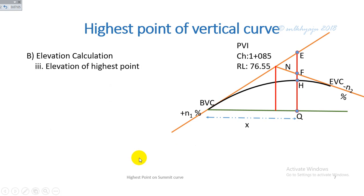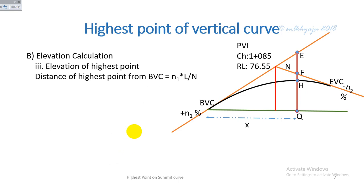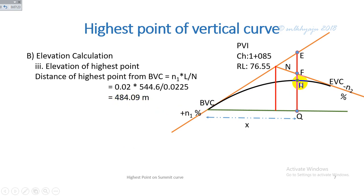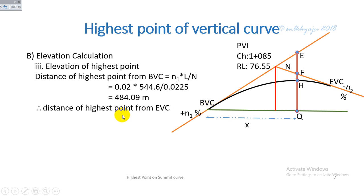The distance of the highest point from the beginning of the vertical curve is calculated using x = n1·L / N, giving x = 484.09 m. As shown in the figure, point H is the highest point, lying at 484.09 m from the beginning of the curve. Therefore, the distance of the highest point from the end of the vertical curve = 544.6 − 484.09 = 60.51 m.